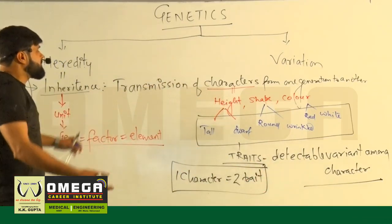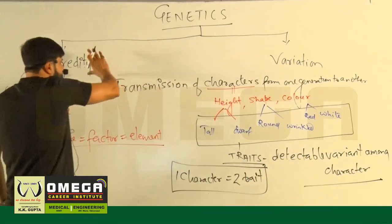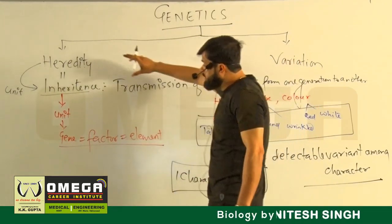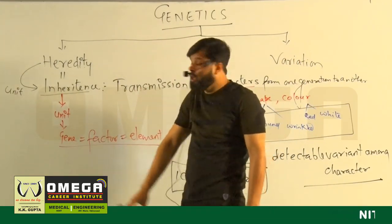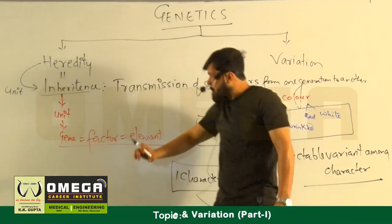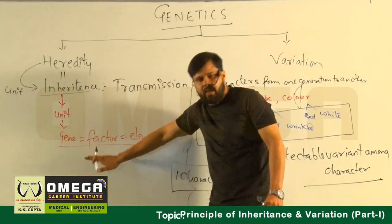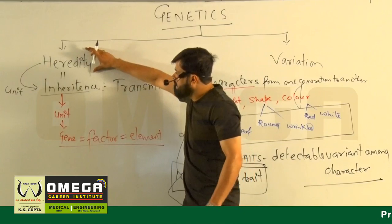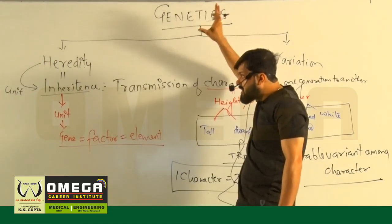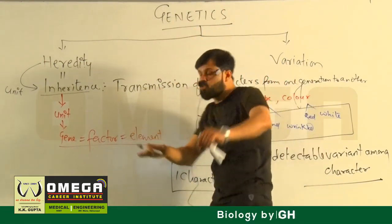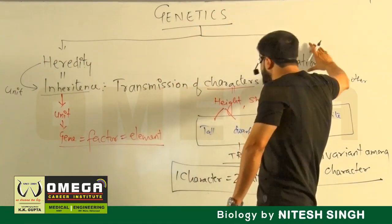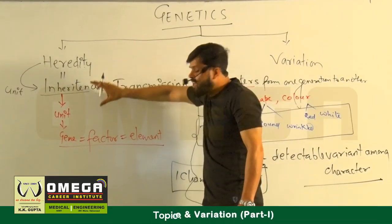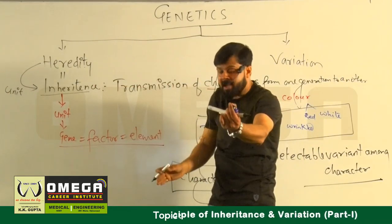Let's summarize. In genetics there are two branches: heredity and variation. Heredity was the original name of genetics. A new branch called variation was added. The gene is the unit of inheritance.